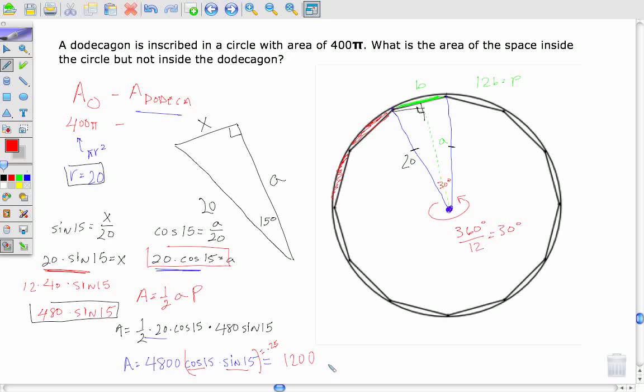So the area of my dodecagon is 1,200, and that's pretty much going to do this problem for me because I already remember what my plan was. I wrote it down up here. It's the area of the circle, 400π, minus the area of the dodecagon, which is 1,200.